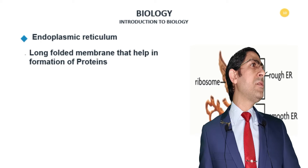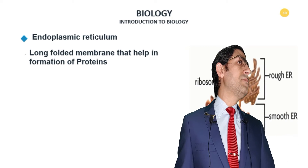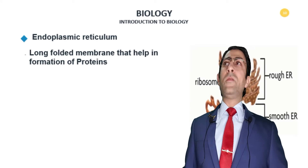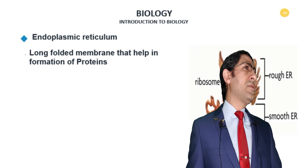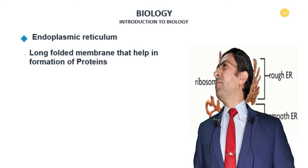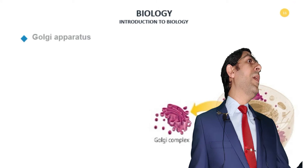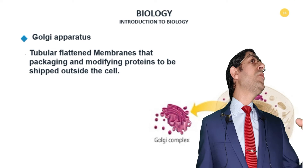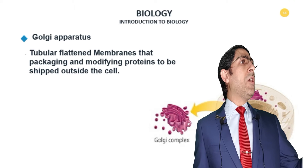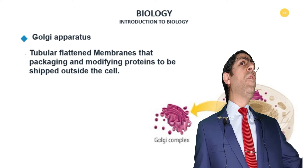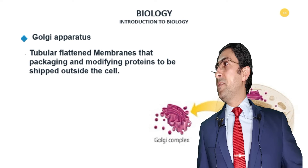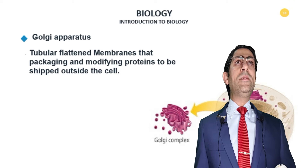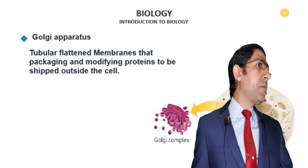Now, a very important organelle: the endoplasmic reticulum. 'Endo' means inside, 'plasmic' means inside the cytoplasm, and 'reticulum' means a network. It's long folded membranes that help in protein formation. It may be rough due to the presence of ribosomes — ribosomes are responsible for protein synthesis. If there are no ribosomes combined with the endoplasmic reticulum, it is referred to as smooth endoplasmic reticulum.